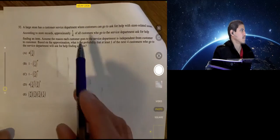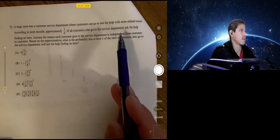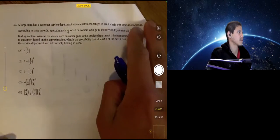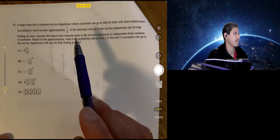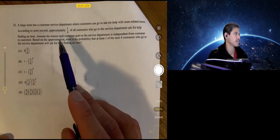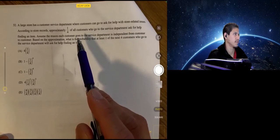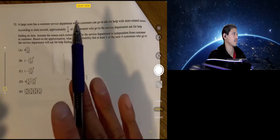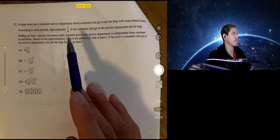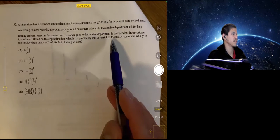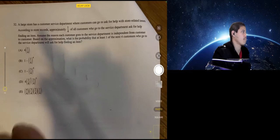All right. Large store has a customer service department where customers can go ask for help with store related issues. According to store records, approximately one fourth of all customers who go to the service department ask for help finding an item. Assume the reason each customer goes to the service department is independent. So the reason one customer goes is not related to the reason that another one goes. Based on the approximation, what's the probability that at least one of the next four customers who go to the service department will ask for help finding an item?